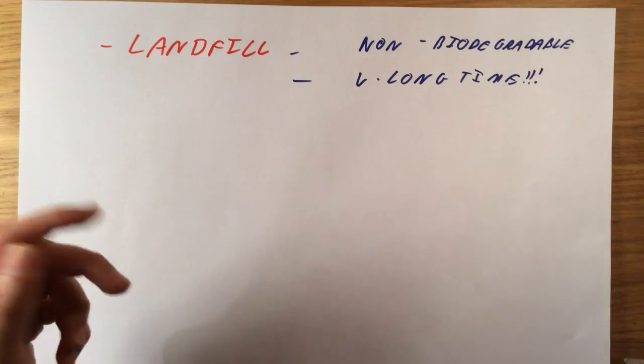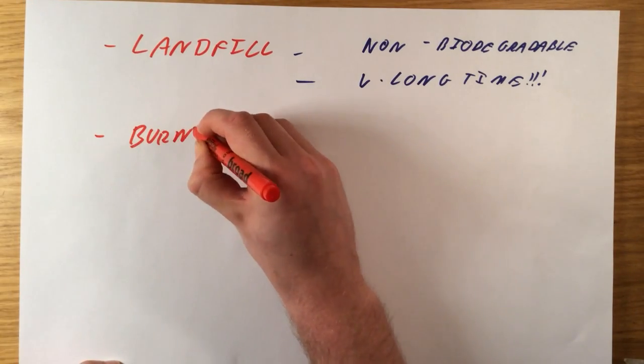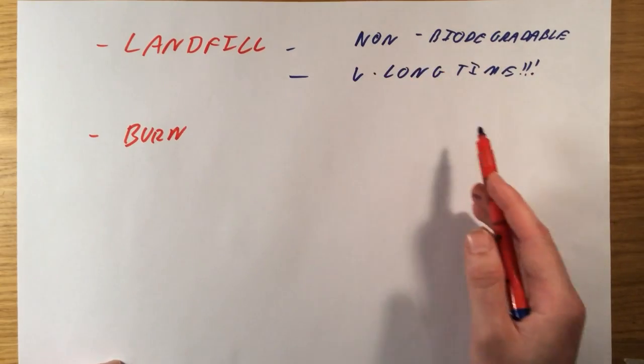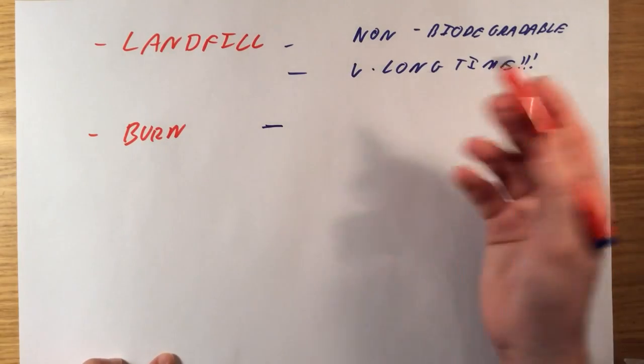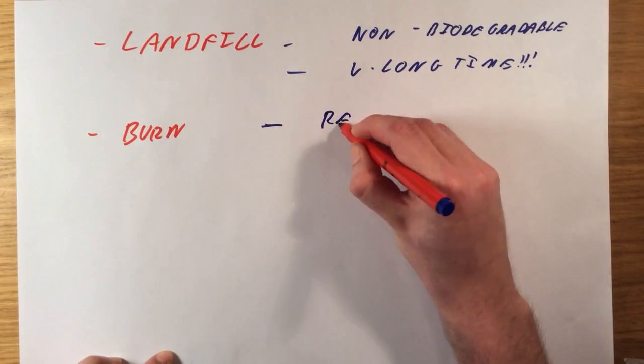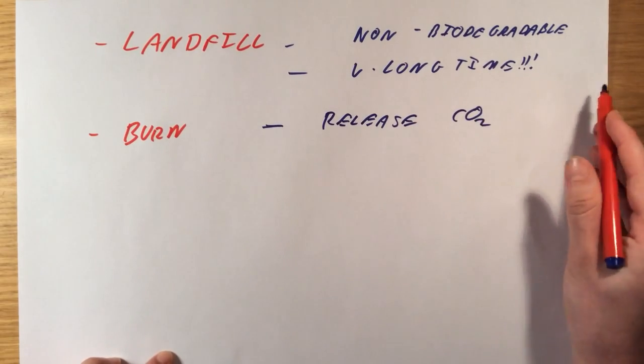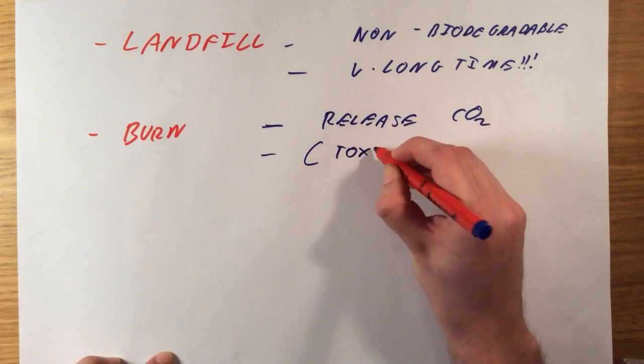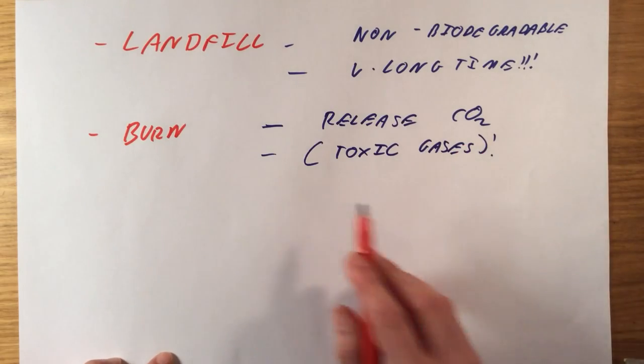Our second method of disposing of polymers, we don't want them to stick in landfill for years. We could burn them. This is going to be better in some regards, and it's not going to cause these landfill sites to fill up. However, since most polymers that we use are based on hydrocarbons, it will release CO2, carbon dioxide, which is going to lead to global warming. Depending on which polymer you're burning, it could release toxic gases too, which is clearly not ideal.